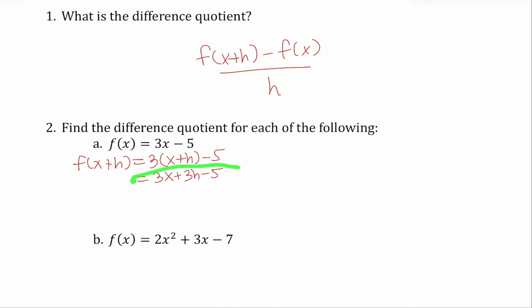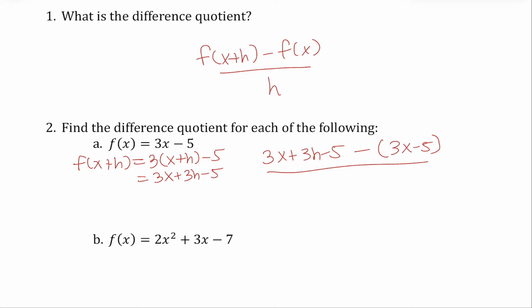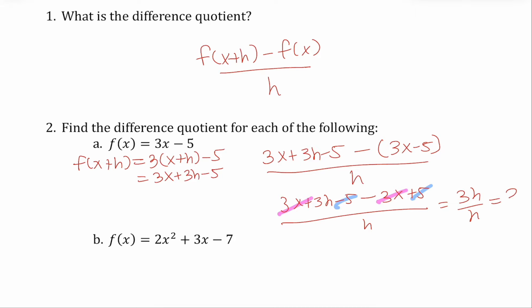Now we're going to put that into the formula in parentheses. So f of x plus h, which we found to be three x plus three h minus five, minus the original function f of x, which is three x minus five, all over h. We get three x plus three h minus five minus three x plus five, all over h. Our three x's cancel, our fives are opposites and cancel, so we get three h divided by h, which is three.